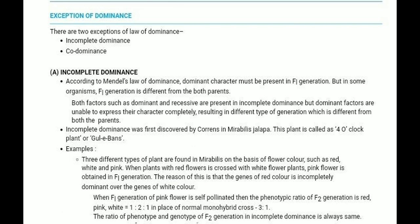Incomplete dominance was first discovered by Correns in Mirabilis jalapa, also called the four o'clock plant. Three different types of plant are found in Mirabilis on the basis of flower color: red, white and pink. When the red flower plant is crossed with white flower plants, pink flower is obtained in the F1 generation. The gene for red color is incompletely dominant over the gene for white flower.